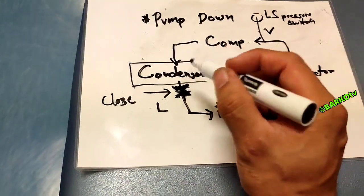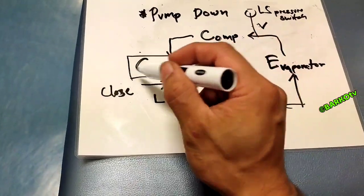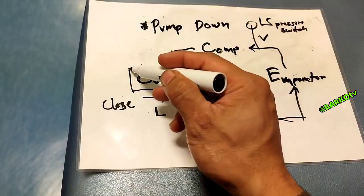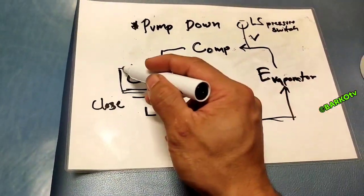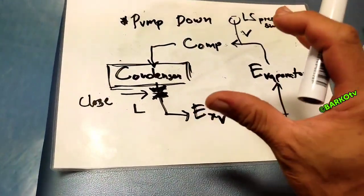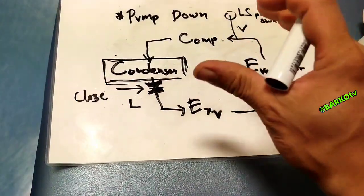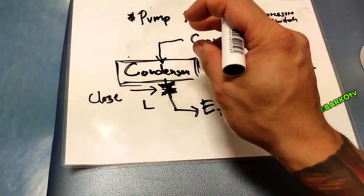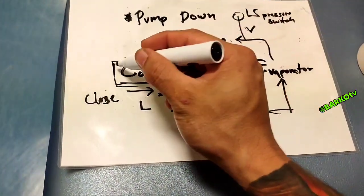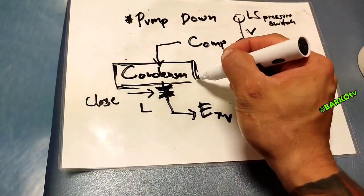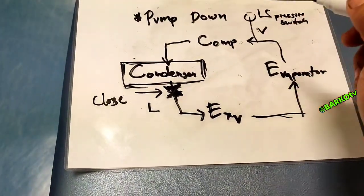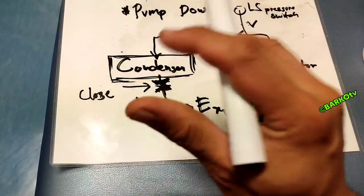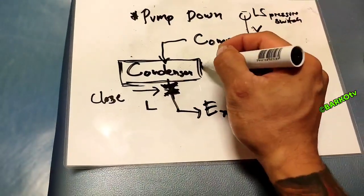That is the only valve you need to be familiar with — the one after the condenser. This same principle applies to your air conditioning unit, whether it is a window-type or split-type aircon. It's the same principle for pumping down. You start by closing the isolating valve.